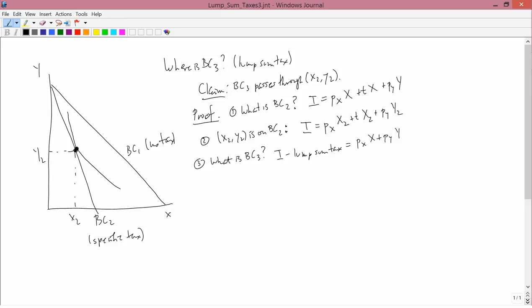But we know that the only way to make this an interesting question is for the lump sum tax revenue to be equal to the specific tax revenue. Otherwise, it's an uninteresting question because you're asking, which would the consumer prefer? A teeny-tiny tax of one sort to a huge tax on the other sort? And of course, the consumer is going to prefer a teeny-tiny tax, so that's not an interesting question. The interesting question is, if the revenue rate is exactly the same, which one does the consumer prefer?